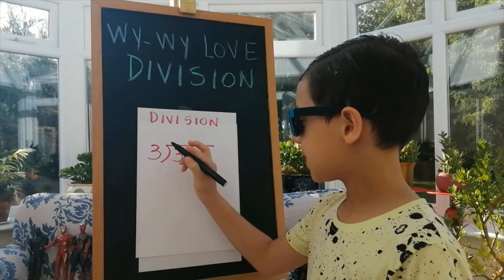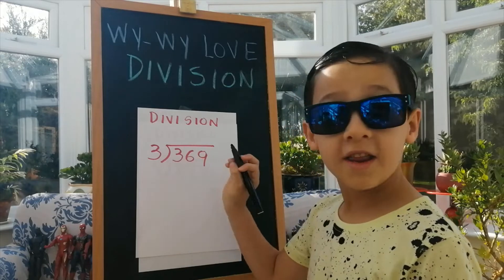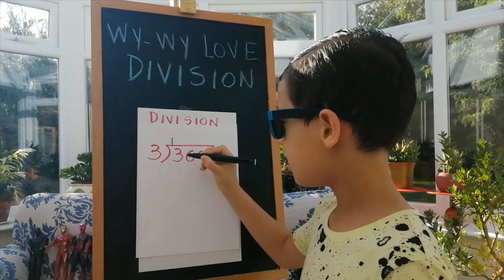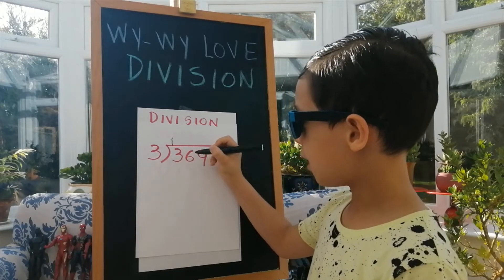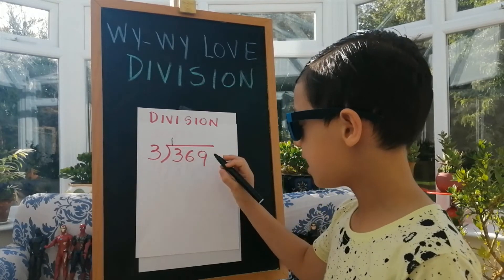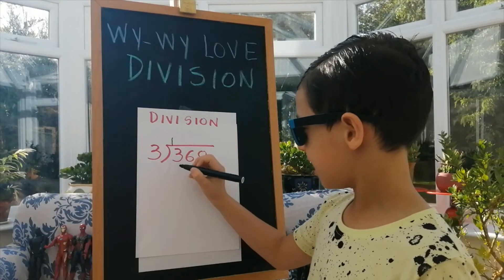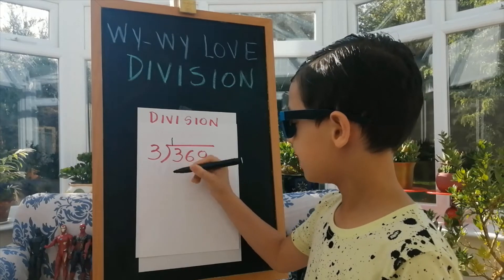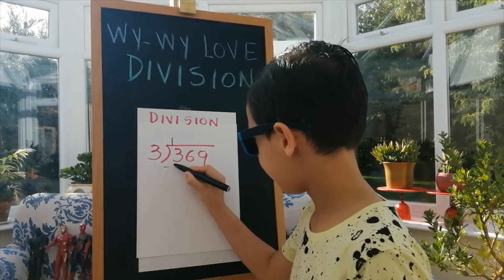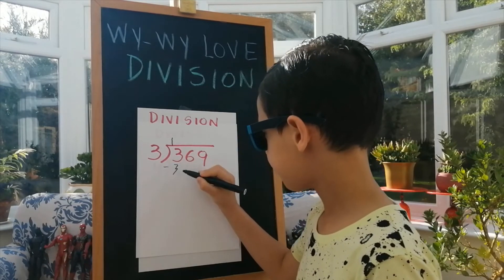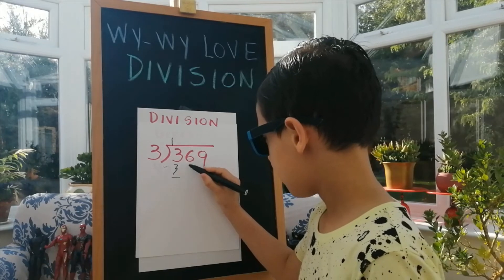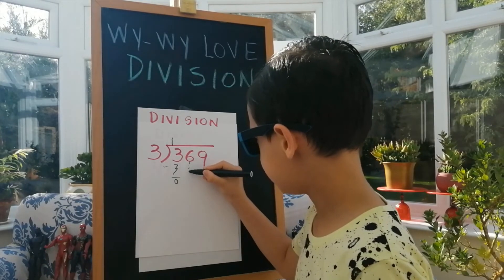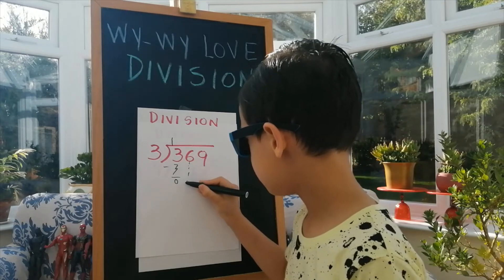How many 3's are in 3? That is 1. 3 times 1 is 3. Remainder is 0. Put the fixed number down.